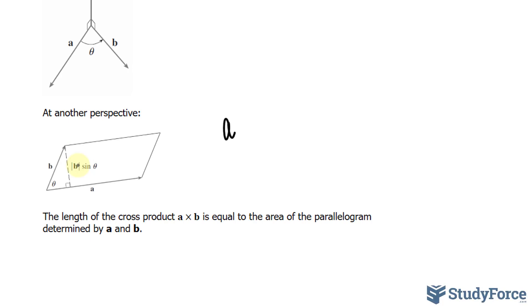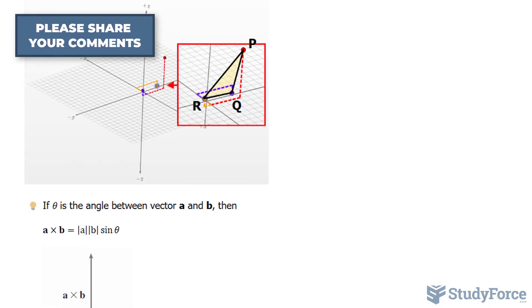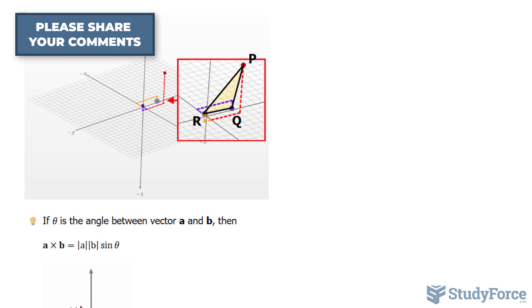Now the reason why we're concerned about parallelograms is because the area of a parallelogram is twice that of a triangle. Think about it. We can split this parallelogram into two triangles. So by finding the length of the cross product, we actually found the area of the parallelogram. And if we want, in our case, a triangle, we simply divide that by two.